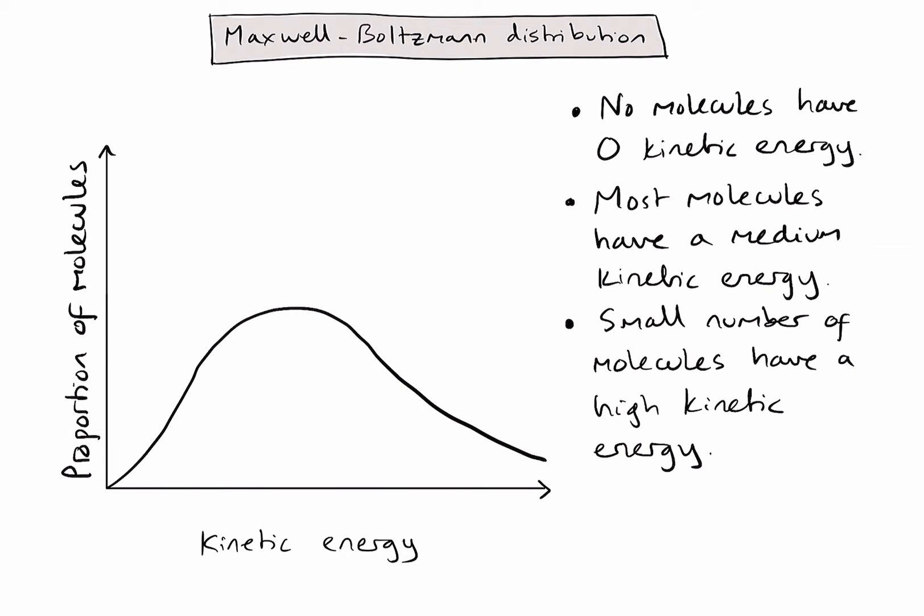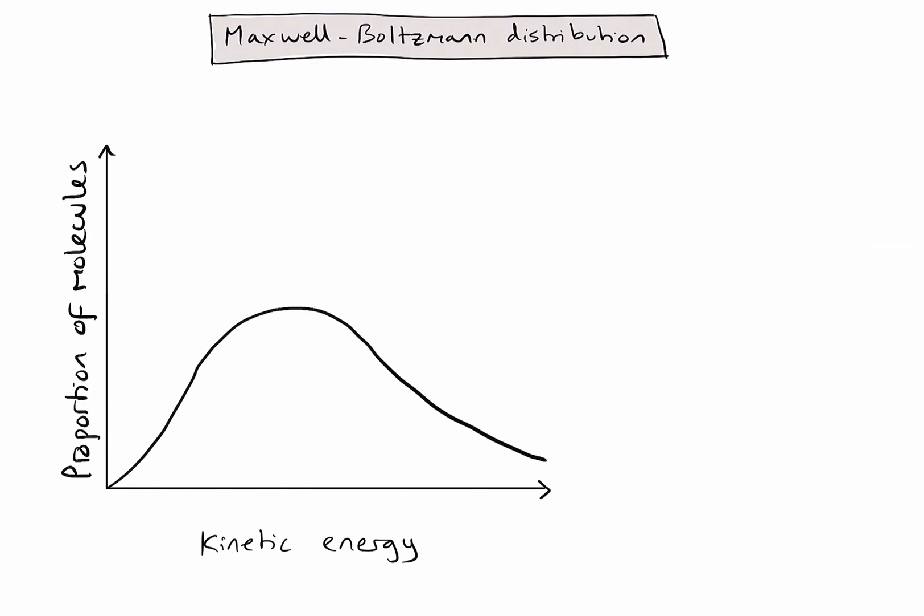In IB chemistry we need to use this graph to explain changes in rate of reaction in different conditions. There is one extra feature we can add to the graph: we know that for a successful collision to occur, and therefore a reaction to occur, molecules must have a minimum amount of kinetic energy that we call the activation energy. So on this graph I'm going to add the activation energy on the x-axis. Any molecules falling underneath the curve to the right-hand side of that dotted line will have the activation energy required for a successful collision.